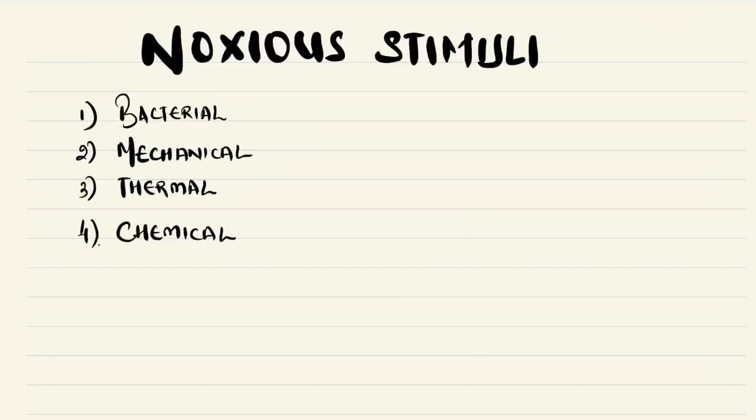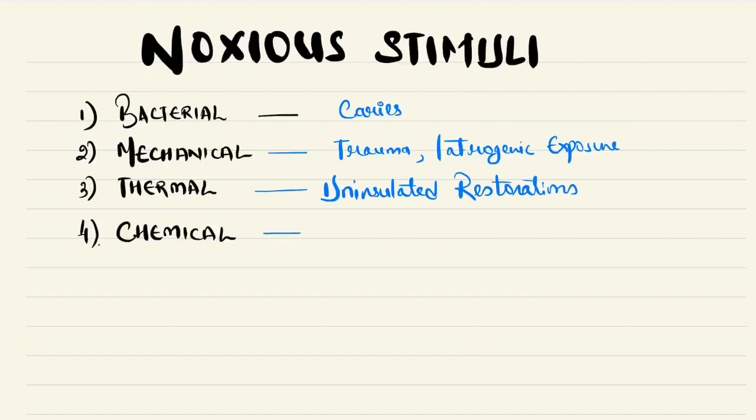Bacterial can be due to caries, mechanical due to trauma or iatrogenic exposure or unknown cause, then thermal due to uninsulated restorations like amalgam restorations directly over the pulp, then chemical due to erosion or acidic materials.